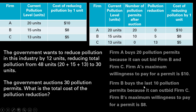Firm B is going to buy the last 10 pollution permits because it can outbid firm C. Firm A doesn't need any more permits — it bought 20 and it's currently producing 20 units of pollution. Firm B is willing to pay at most $8 for a pollution permit, while firm C would only be willing to pay $5. Firm C is not going to pay $6 or $7 for a pollution permit when it can reduce pollution by itself at a cost of only $5.